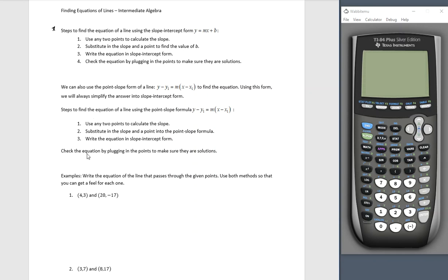So before we get to all of this in the middle, I want to do this first example. We're going to use any two points to calculate the slope. Let's find our slope: negative 17 minus 3. Remember always subtract the y values first, in the same order subtract the x values. Negative 17 minus 3 is negative 20. 20 minus 4 is 16.